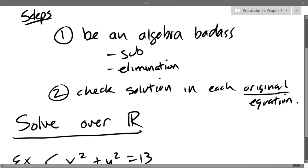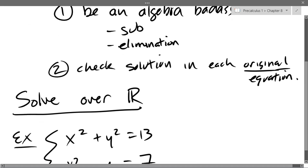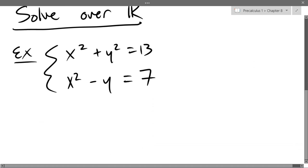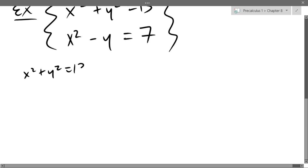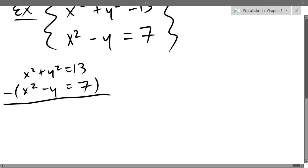You know algebra, and what we're going to be doing is substitution or elimination, or both. What can I do to eliminate x squared? Multiply by negative one. I can multiply the first equation by negative one and subtract from the second one. So we have x squared plus y squared equals 13, and x squared minus y equals 7, and we're going to subtract using elimination.